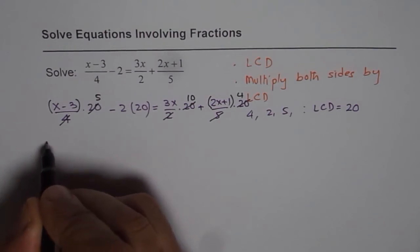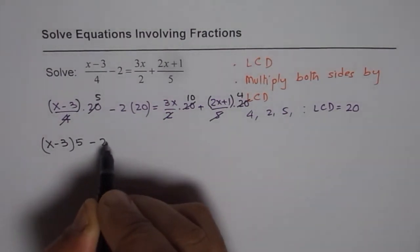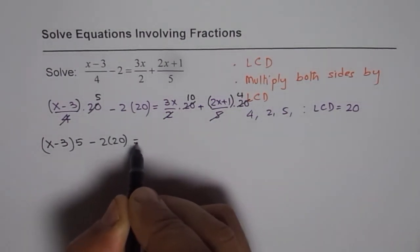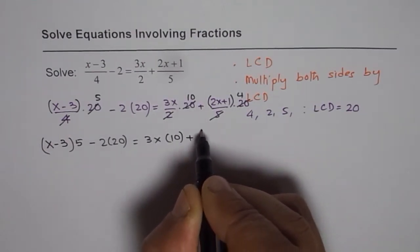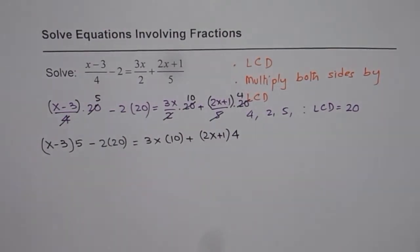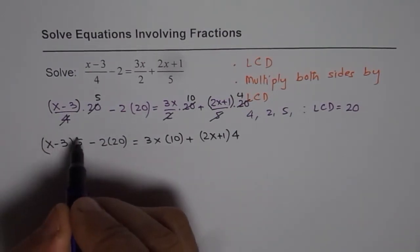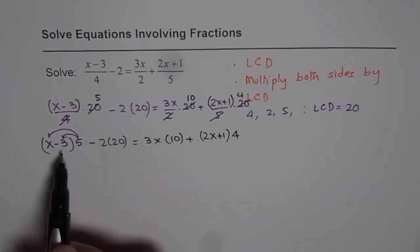At this stage what we have is (x minus 3) times 5 minus 2 times 20 equals to 3x times 10 plus (2x plus 1) times 4. Now you can expand using distributive property. So when we say distributive property, the number outside gets multiplied with both the numbers inside. So that is important. Don't just multiply by one of them.